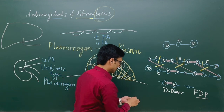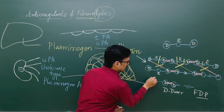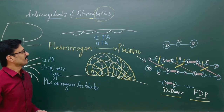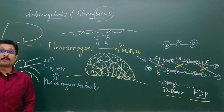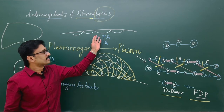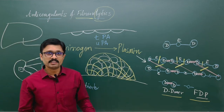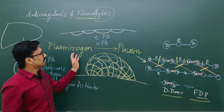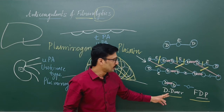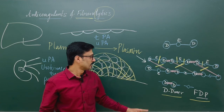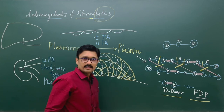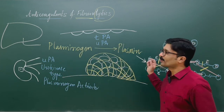This active plasmin is the cutter that will cut the fibrin threads to form D-dimer and small fragments. So this is the fibrinolytic system: the endothelial cells and the kidney cells secrete plasminogen activators that convert plasminogen to plasmin, and plasmin cuts fibrin threads to give rise to fibrin degradation products — D-dimer and other fibrin degradation product pieces.